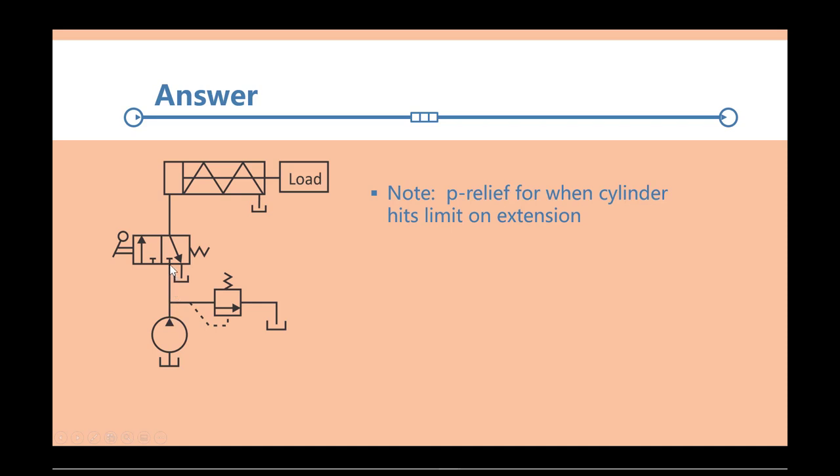You have this connection coming up here. Well, if you look at each envelope and count the number of connections to it, one, two, three, one, two, three. So that means it's a three by two valve.